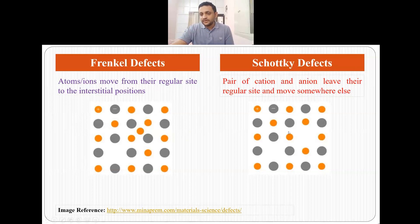In Schottky defect, suppose there is an anion which is over here and a cation over here, and if this cation and anion both leave from the regular site and they move somewhere else, then we say the material has a Schottky defect. So these are five different types of point defects which may be present in a material because of a number of reasons.